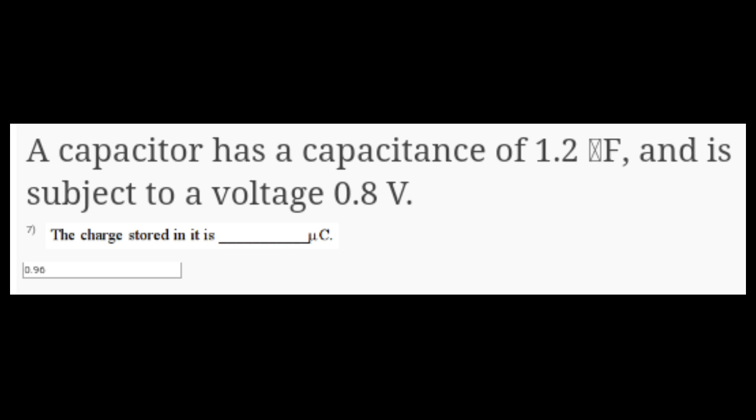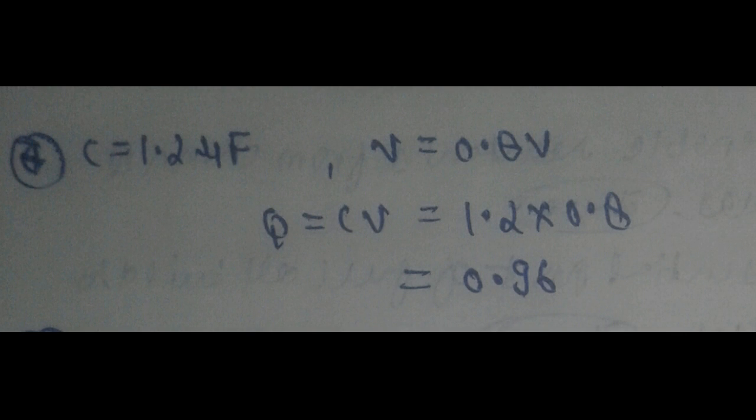For question number seven and eight, taking the theoretical part: a capacitor has a capacitance of 1.2 microfarad and is subject to a voltage of 0.8 volt. The seventh question is the charge stored in it. We know there is a formula Q = CV, where Q is charge, C is capacitance, and V is voltage. So we have to find Q, simply we have to multiply C and V. After multiplying 1.2 into 0.8, we get 0.96. So the answer for the seventh question is 0.96.